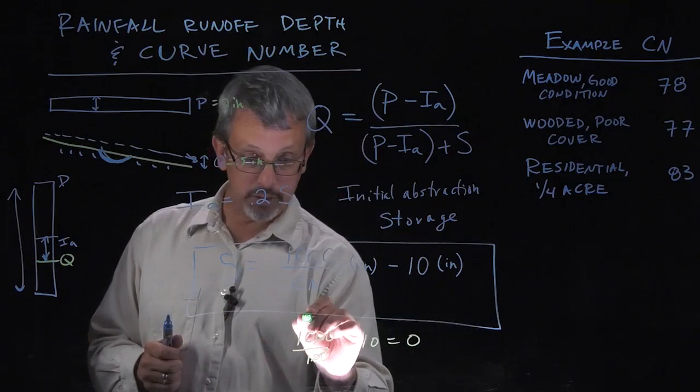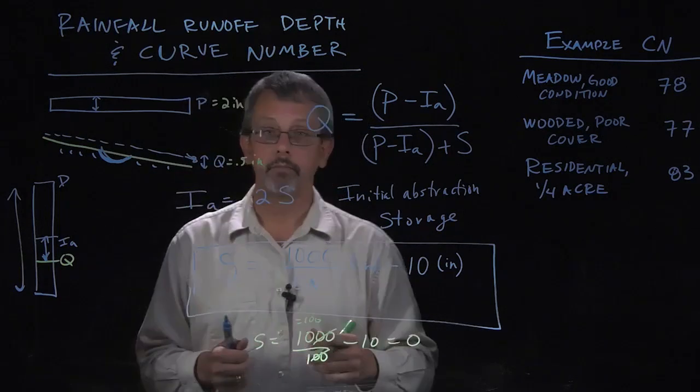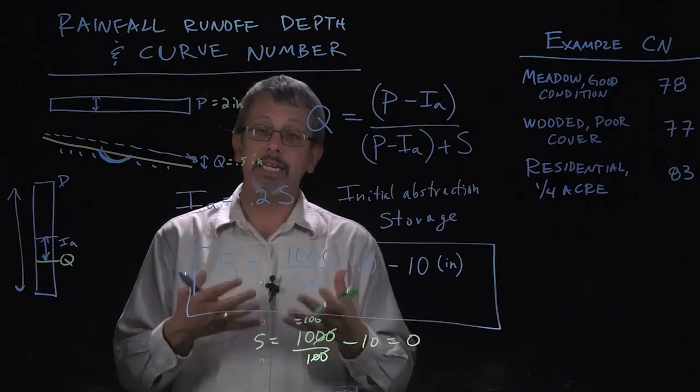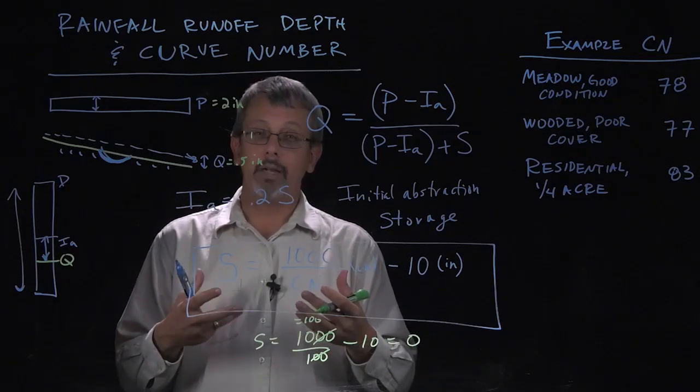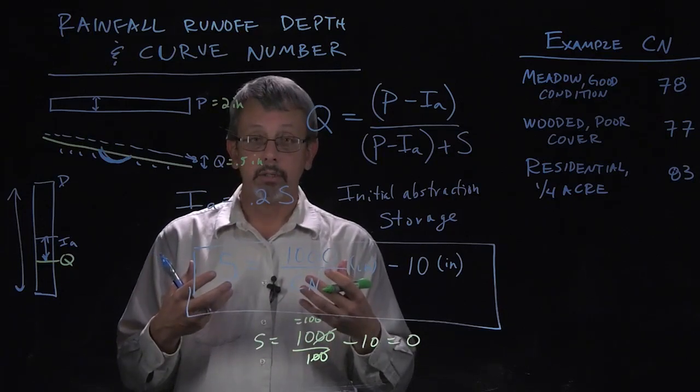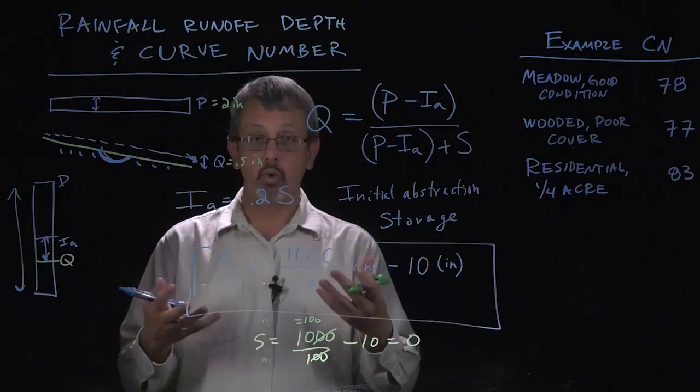So when the curve number is 100, we get a storage of 0. Effectively, the curve number represents a percentage of how impervious the surface is. The higher the curve number, the less likely it is that water is going to seep in and be stored. It's going to runoff.